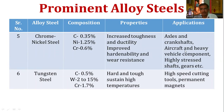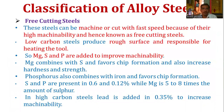The next alloy steel is tungsten steel. It contains 0.5 percent carbon, 2 to 15 percent tungsten, and 1.7 percent chromium. Its properties are that it is hard and tough and sustains high temperatures. Applications include high speed cutting tools and permanent magnets. This brings us to the classification of alloy steels.